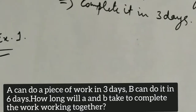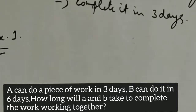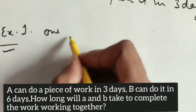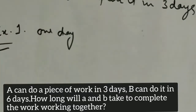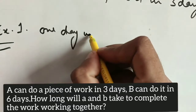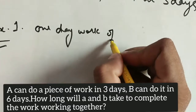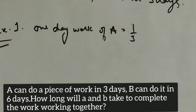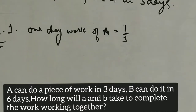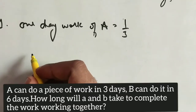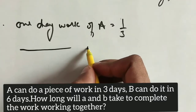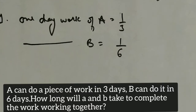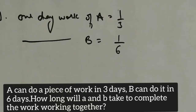Example 1: A can do a piece of work in 3 days, so the 1-day work of A will be 1/3. B completes it in 6 days, so the 1-day work of B will be 1/6th.